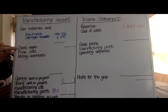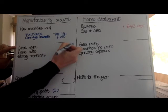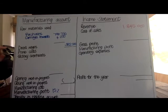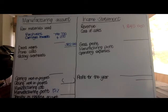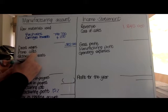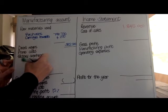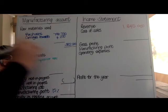Direct wages can also be called direct labor or factory production wages. We don't need to calculate it further because it is just one amount. Factory supervisory wages are a little more interesting — because it says factory, it goes in manufacturing, however it's not production wages, so I can't attribute it directly to the production of the product. Therefore, it's going to be part of my factory overheads as factory supervisor wages, or indirect wages — 64,000.